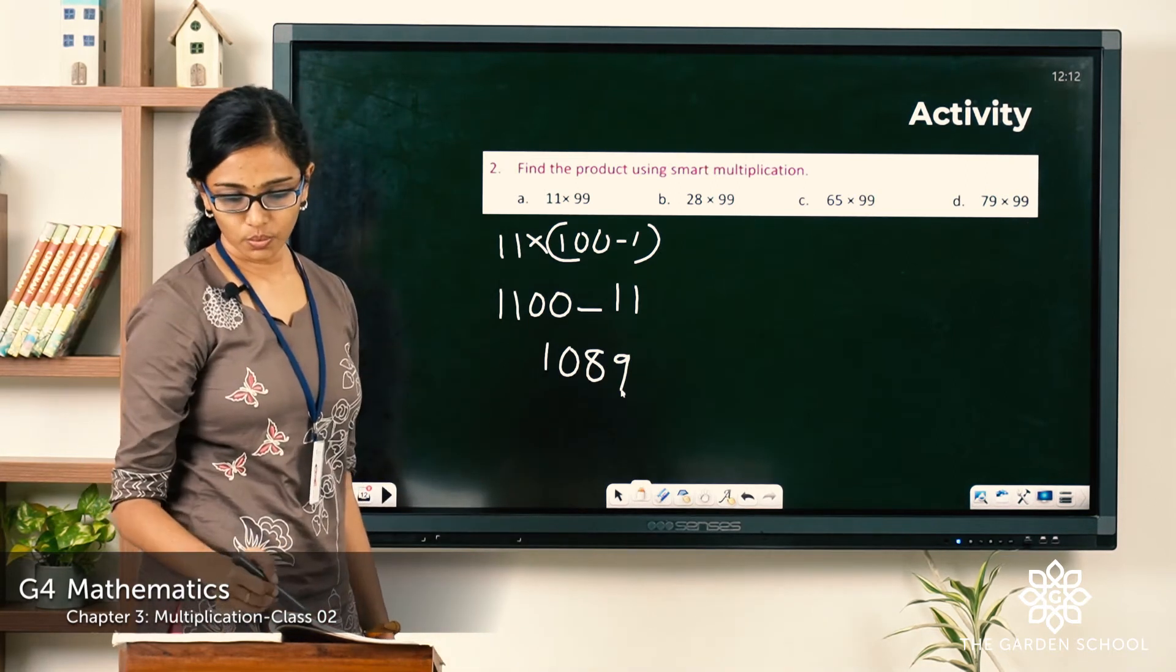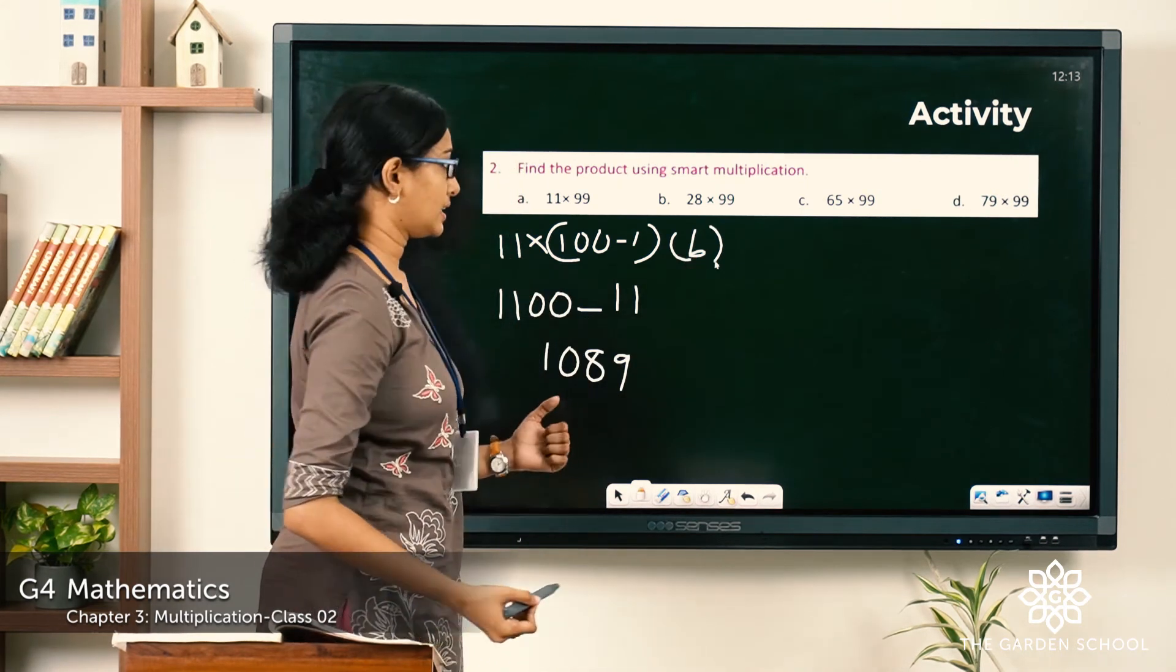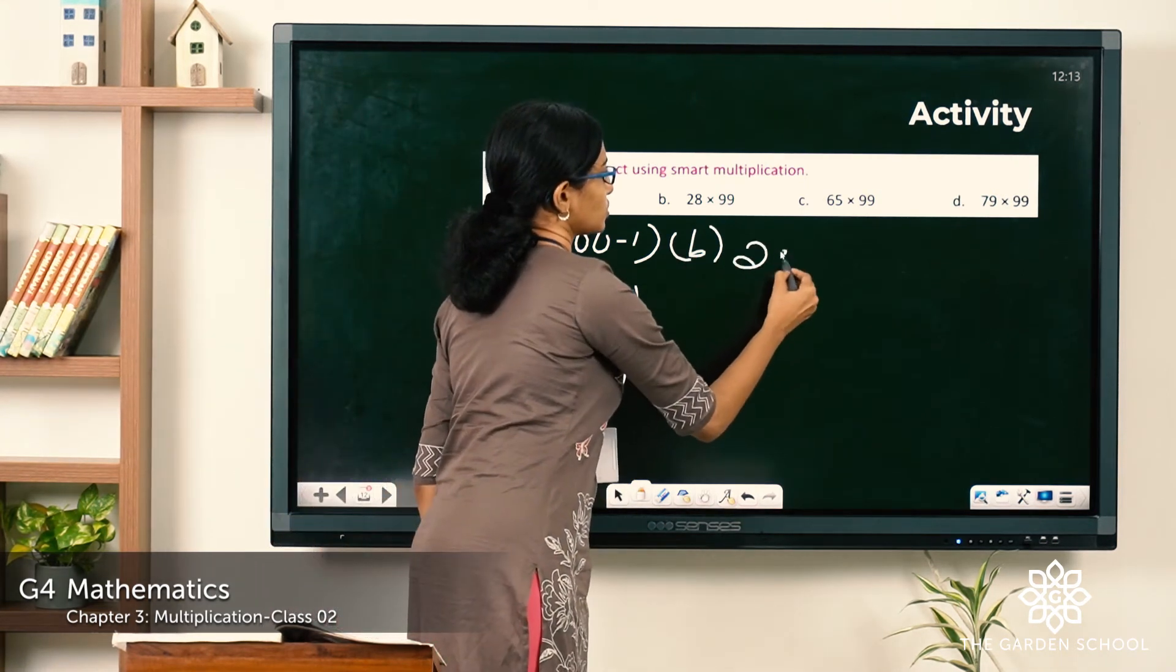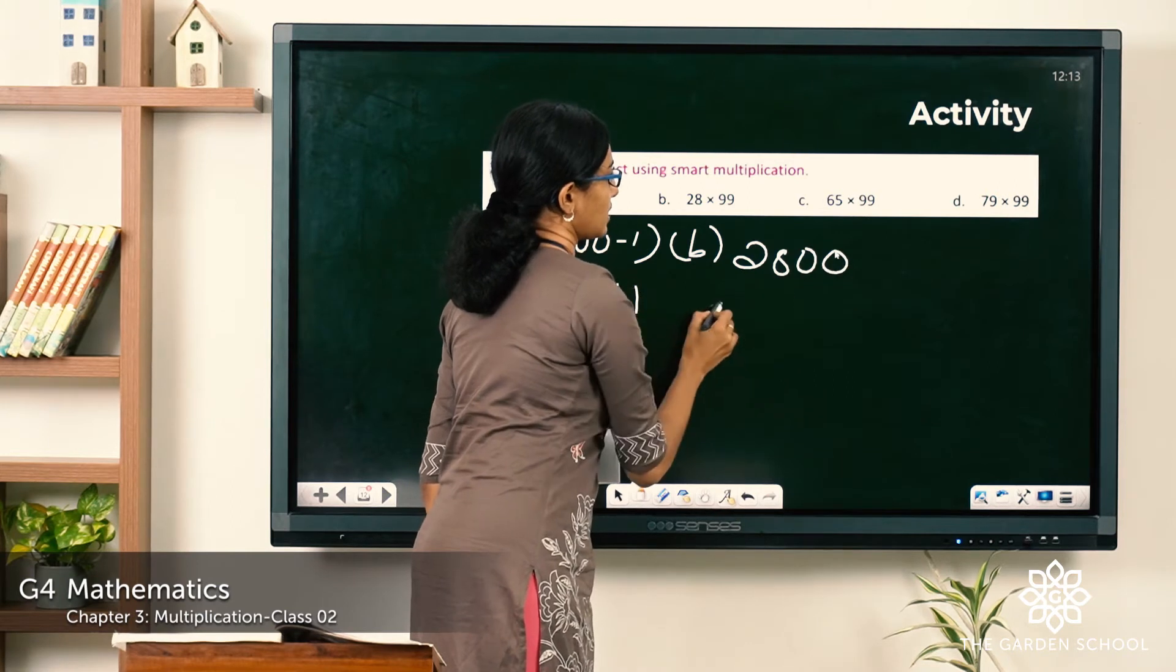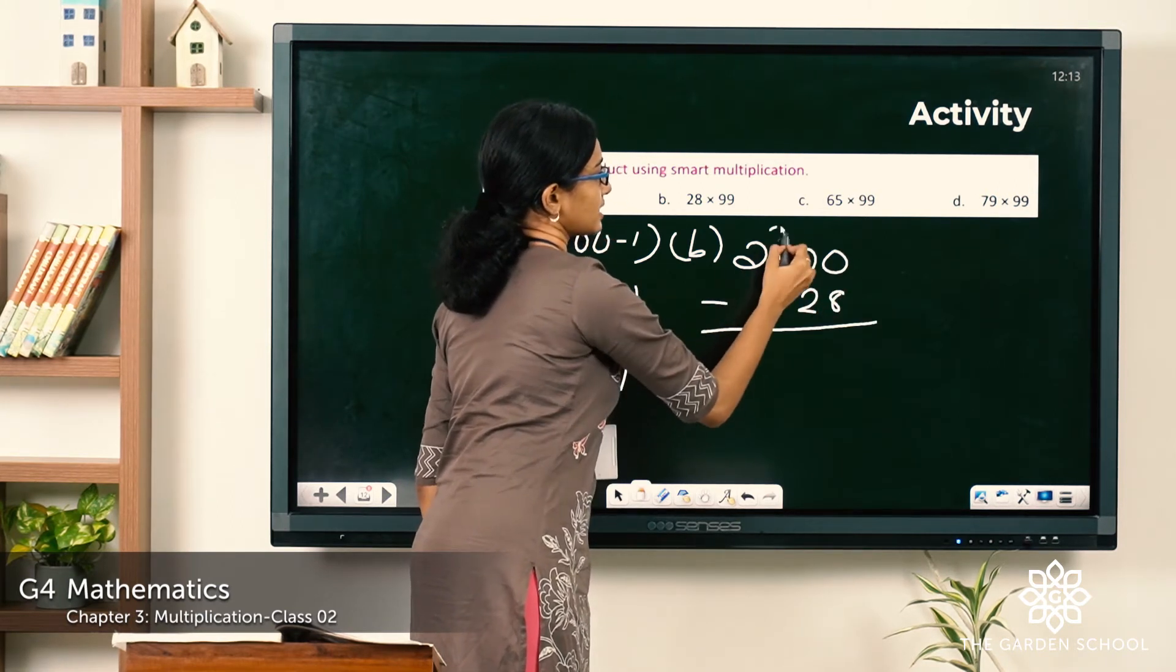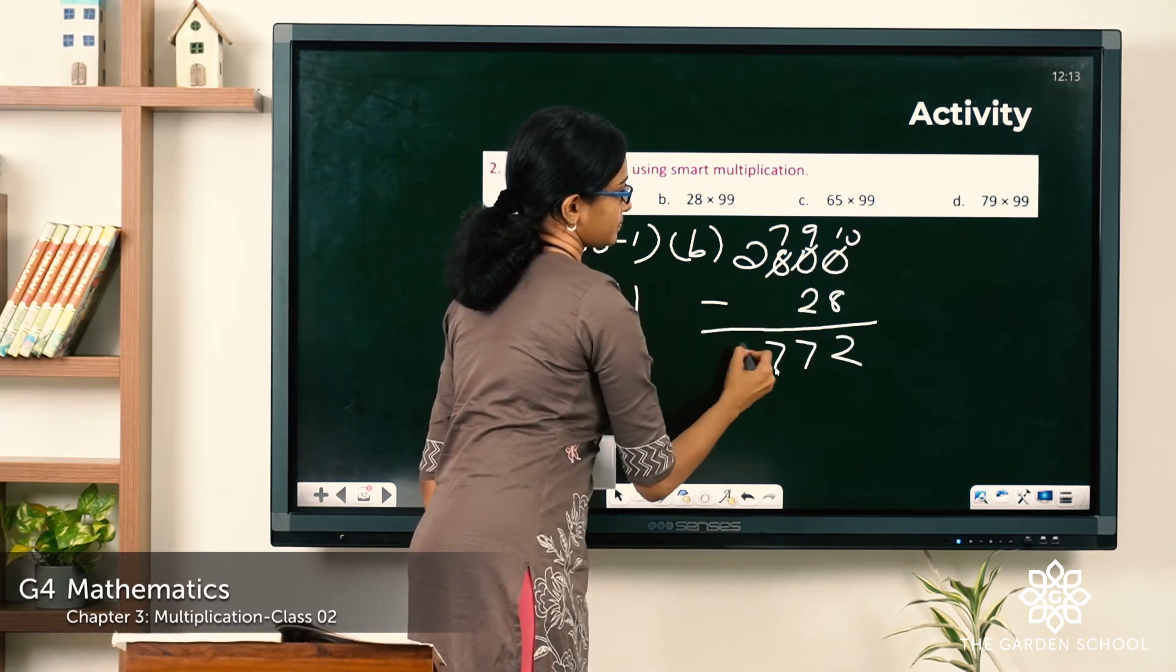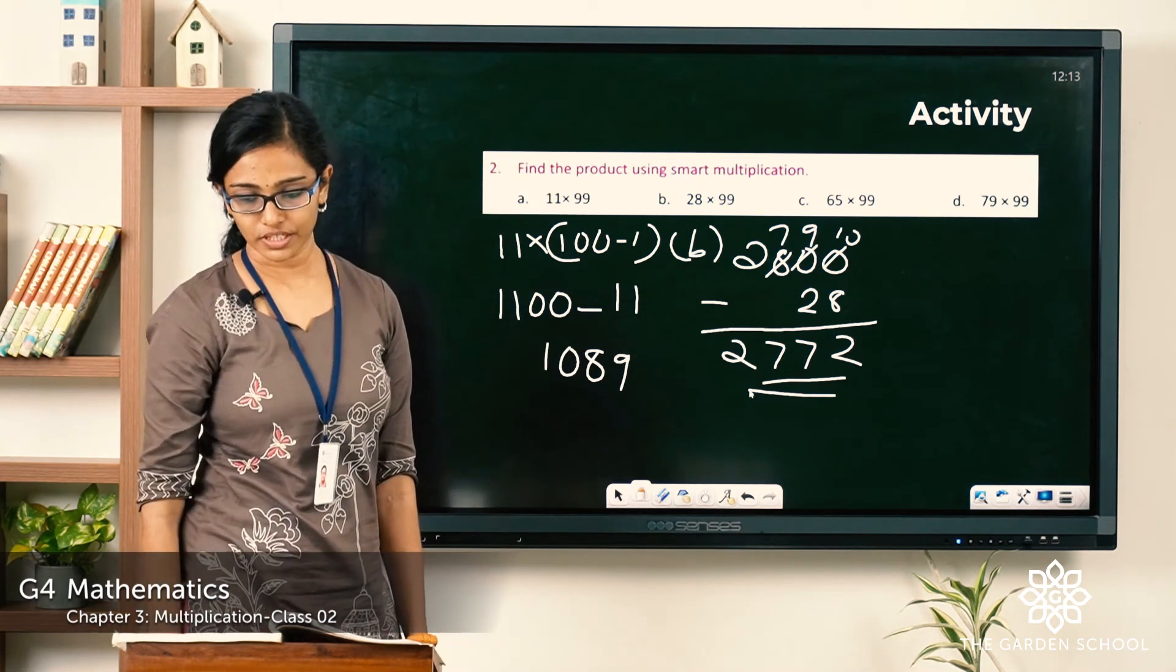Now let's move on to the next question. It's B: 28 into 99 which would be equal to 2800 minus 28. So what is the answer? It is 2772.